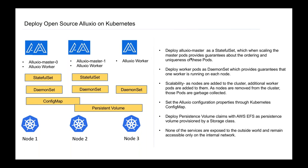The Alluxio configuration is provided by a ConfigMap, and two services are spun up on top of these StatefulSet pods. The workers are deployed as DaemonSets, which guarantee that at least one pod will run per node — so each node in the EKS cluster will run one Alluxio worker. After deployment, the scalability of the Alluxio cluster is integrated into the scalability of the EKS cluster. If you want to increase Alluxio cluster size, just add more nodes to your EKS cluster — each new node gives you a new worker. To bring it down, just scale down the EKS cluster.